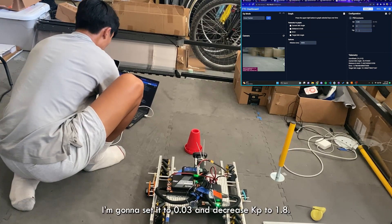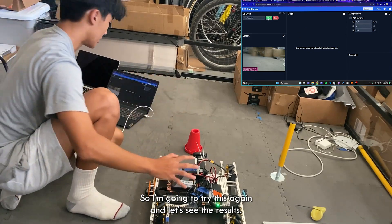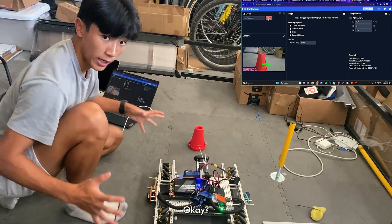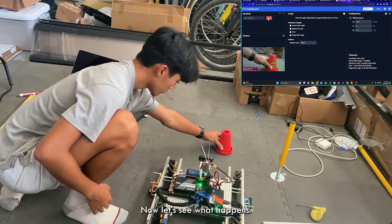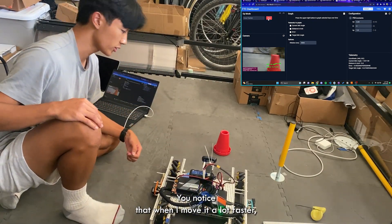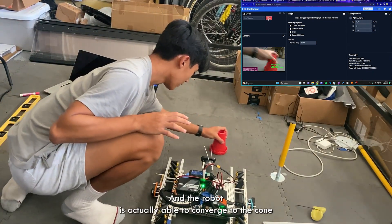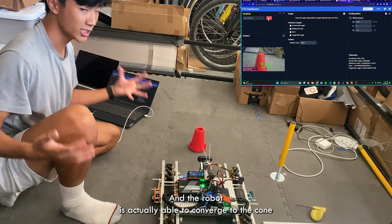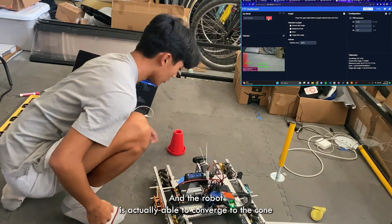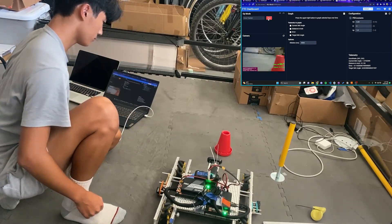Okay, now let's see what happens. You notice that when I move it a lot faster, the oscillations are a lot less and a lot less extreme, and the robot is actually able to converge to the cone just like that.